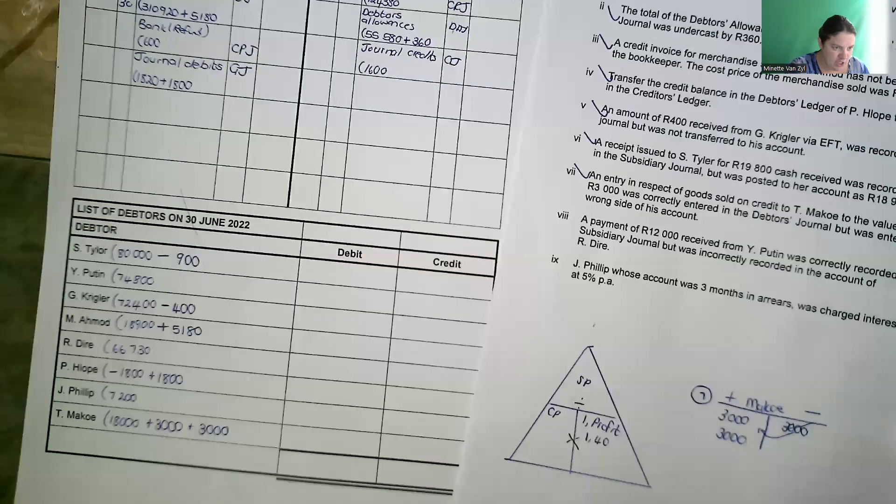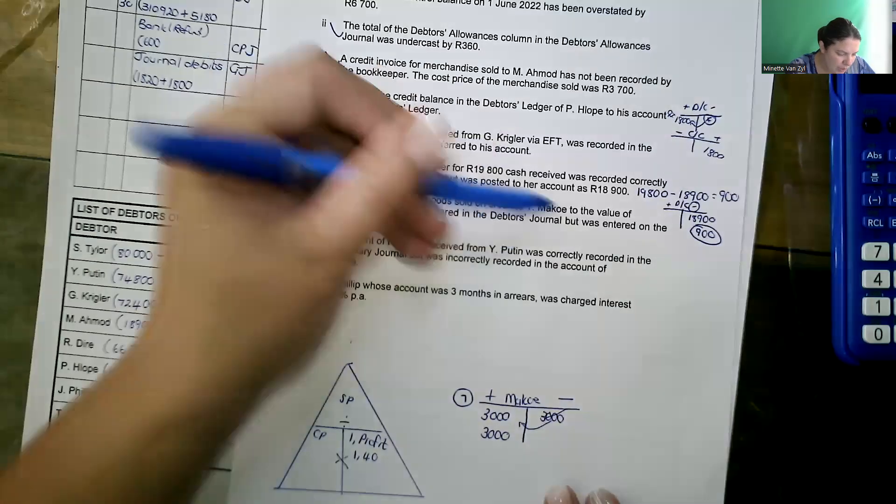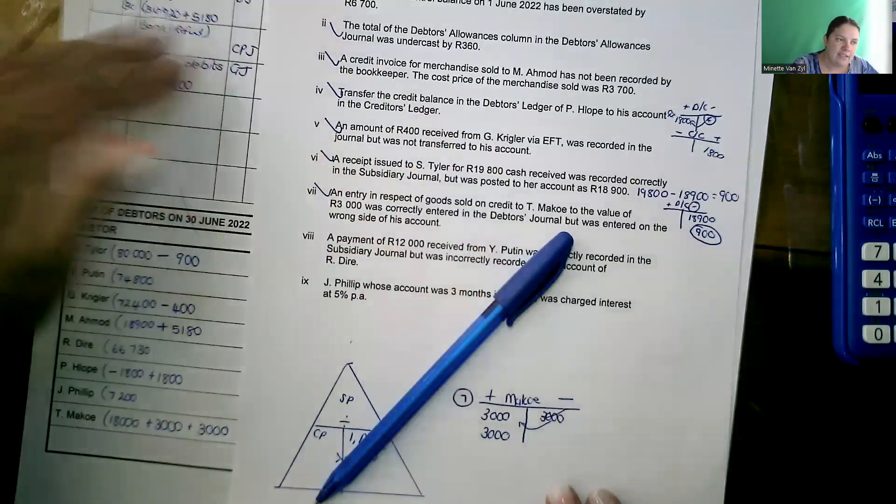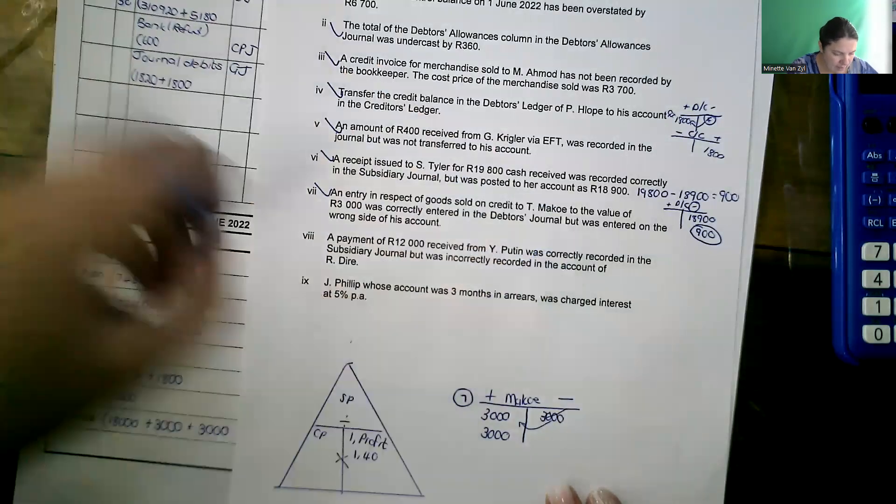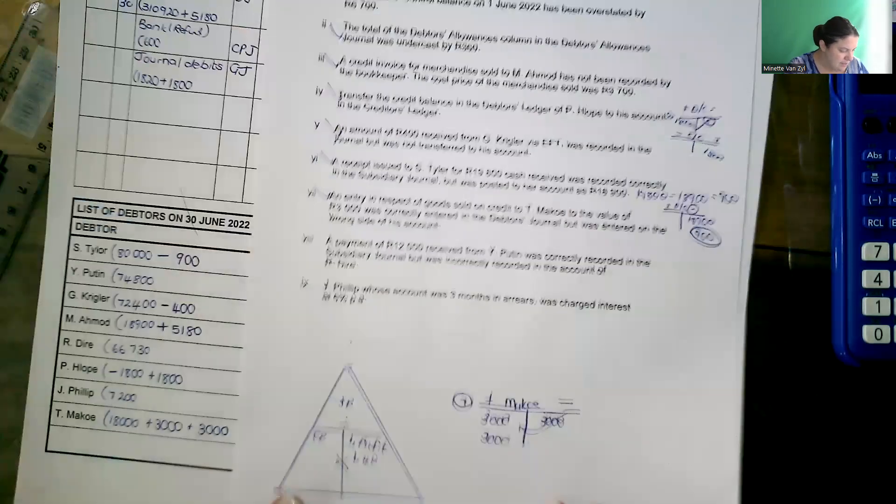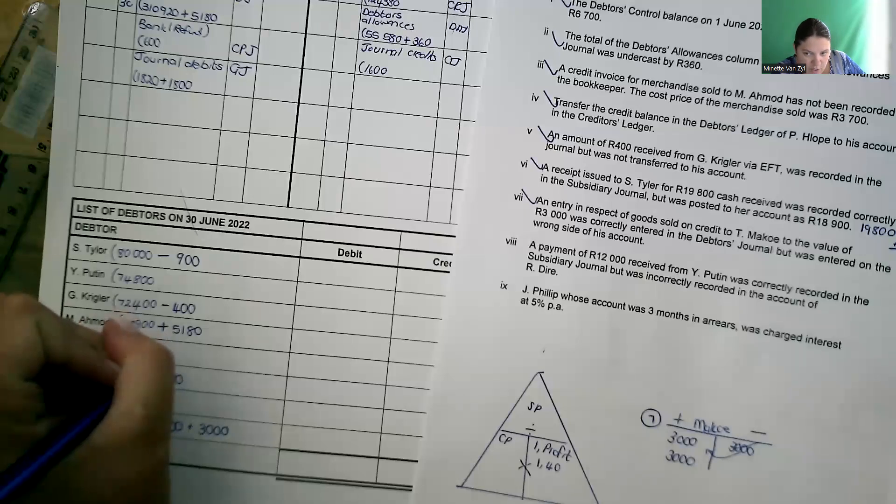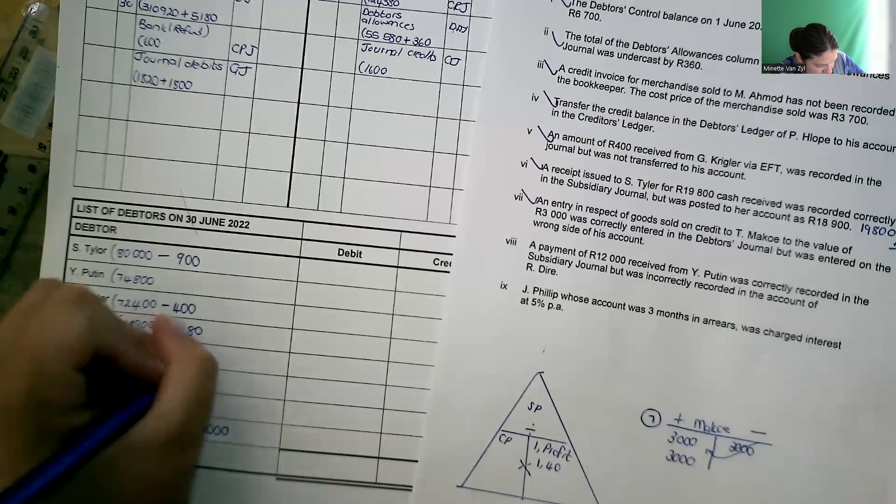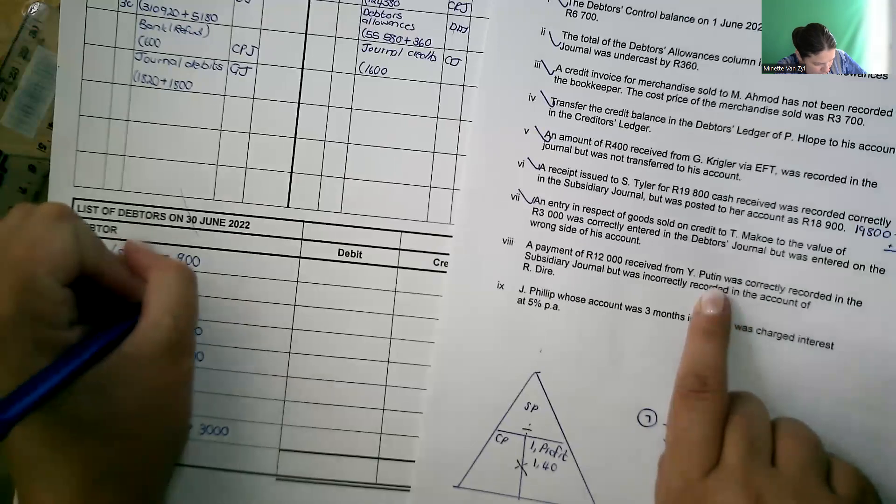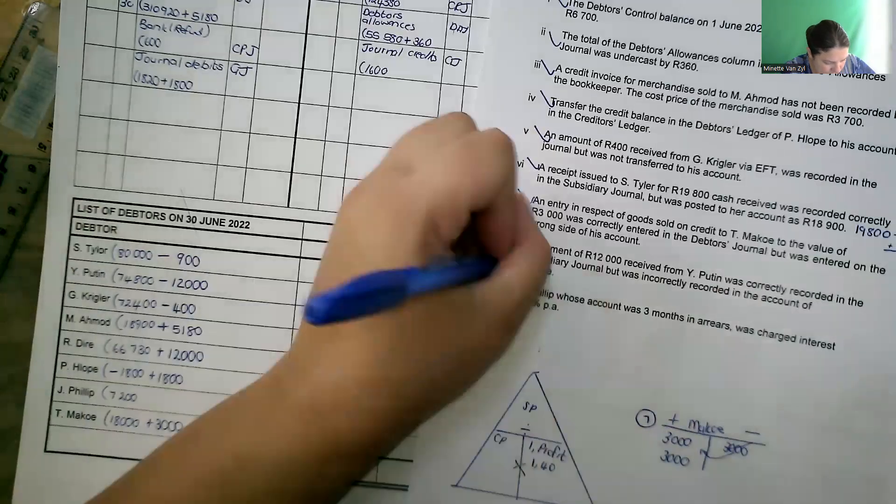Next transaction. A payment of 12,000 received from Putin was correctly recorded in the journal. If your journal is correct, your control account is correct. But was recorded in the account of Dyer. So at Dyer, Dyer did not pay us. So let's add 12,000 to his account. He did not pay us. Who did pay us? Putin paid us. So Putin minus 12,000.